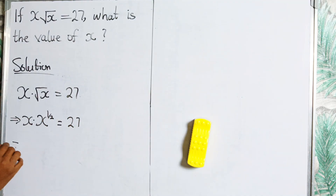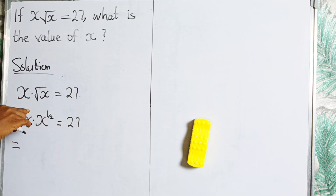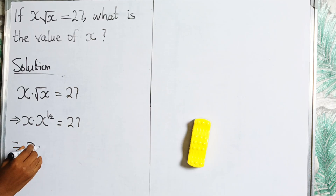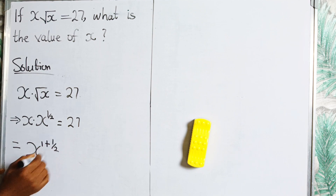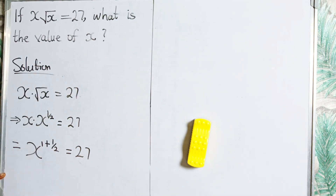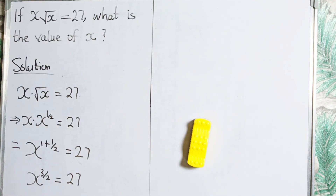The next thing I'm going to do is simplify the power. There is an invisible 1 as the exponent of x, so applying the law of indices — I take one base and add the powers — I have x raised to power 1 plus 1 over 2 equals 27. Now if I add 1 plus 1 over 2, I get x raised to power 3 over 2 equals 27.